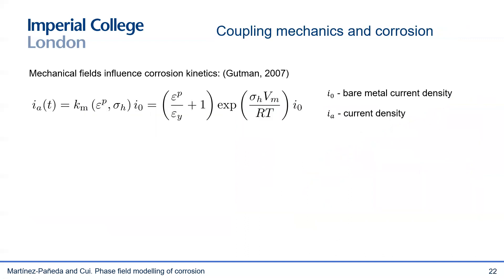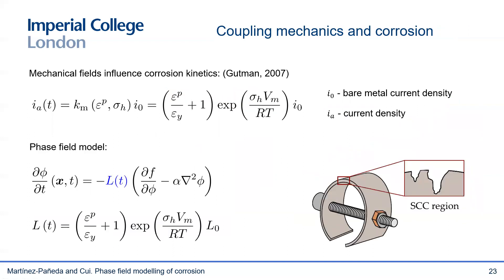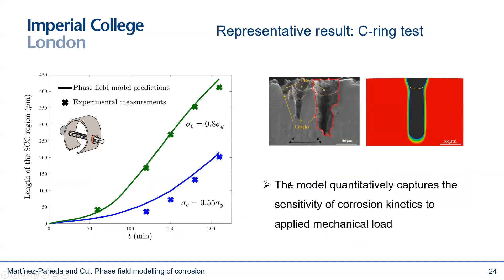Now let me take you to some of the core novelties of our work related to the coupling with mechanics. The first one is the influence of mechanical fields in enhancing corrosion rates, as argued by Gutman and others. You can see how the equivalent plastic strain and the hydrostatic stress change the corrosion current density. Since the mobility coefficient L is related to the current density, we can enhance its definition to take into consideration the influence of mechanics on corrosion kinetics, such that L is no longer a constant. We validate our approach with C-ring experiments conducted at different loads. On the right, you can see how the corrosion defect morphology prediction agrees very well with experimental observation, and on the left, the predictions of corrosion defect length as a function of time agree very well with experimental measures for two different loading conditions.